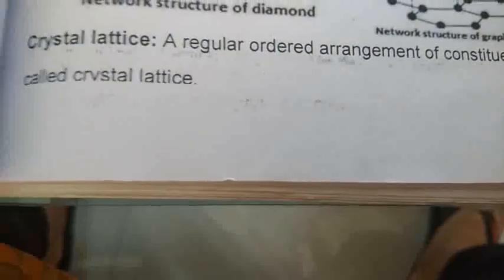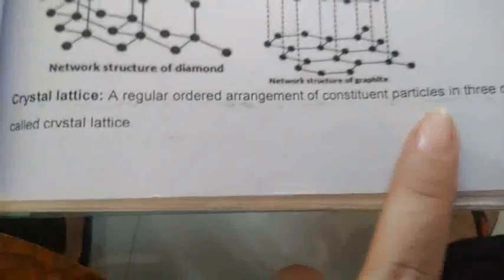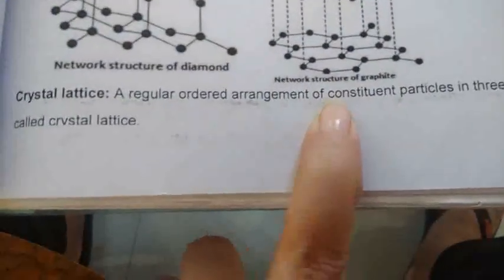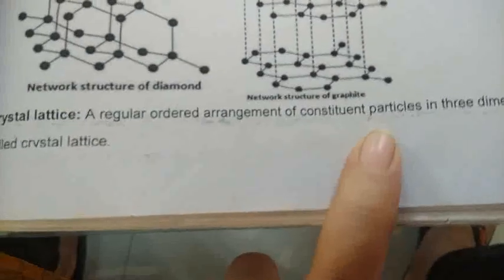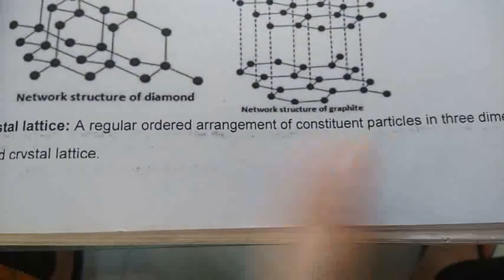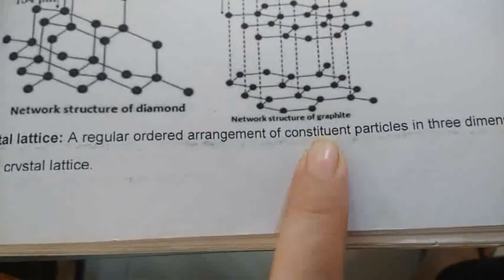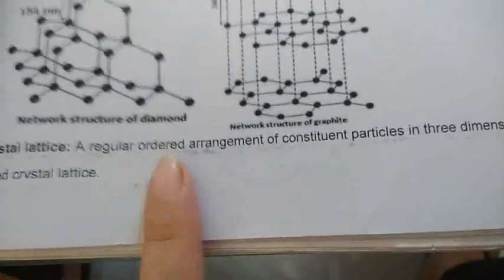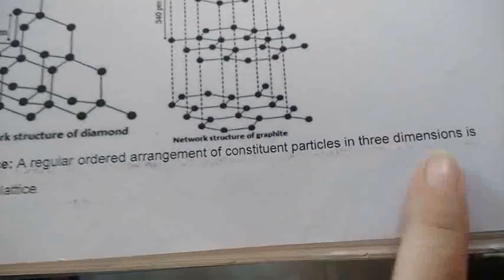The chapter now starts with the question: what is a crystal lattice? A crystal lattice is a regular ordered arrangement of constituent particles in three-dimensional form. Constituent particles are the particles which make that particular solid.